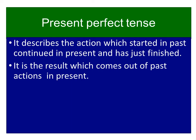Present perfect tense describes the action which started in the past, continued in the present, and has just finished. The second point is that it shows the result which comes out of past actions in the present. Present perfect tense is the tense in which we show the results of past actions.